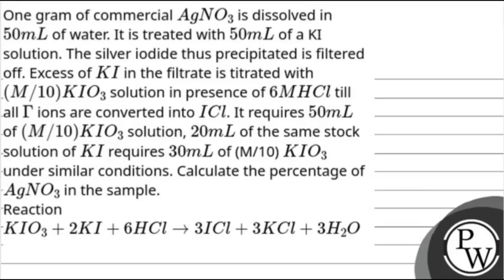Hello, let us see the question. The question says 1 gram of commercial AgNO3 is dissolved in 50 ml of water. It is treated with 50 ml of a KI solution. The silver iodide thus precipitated is filtered off.